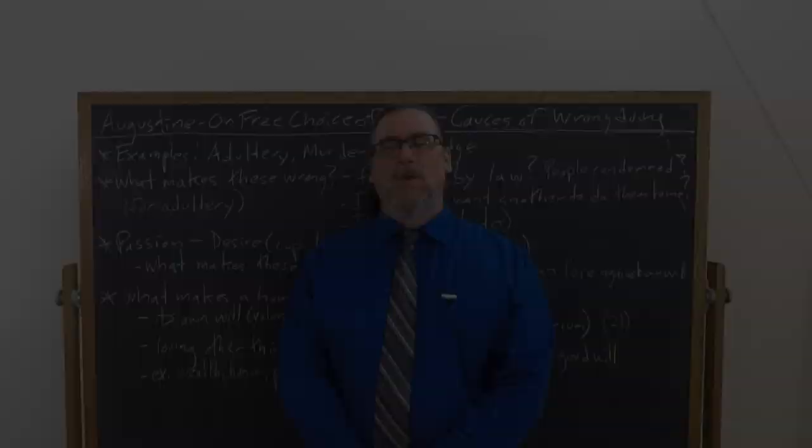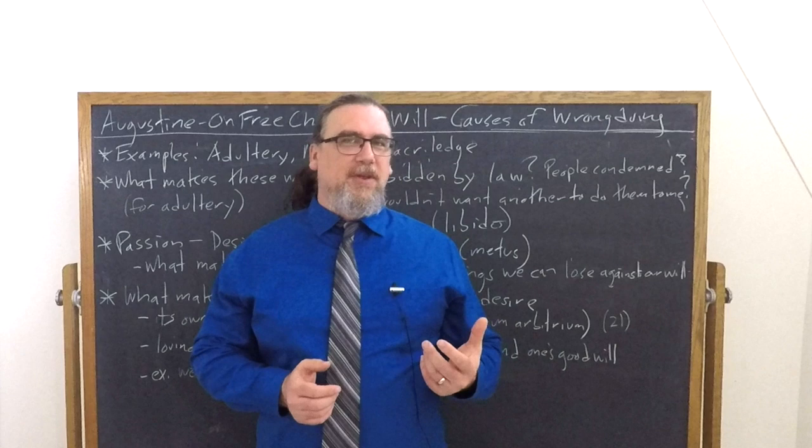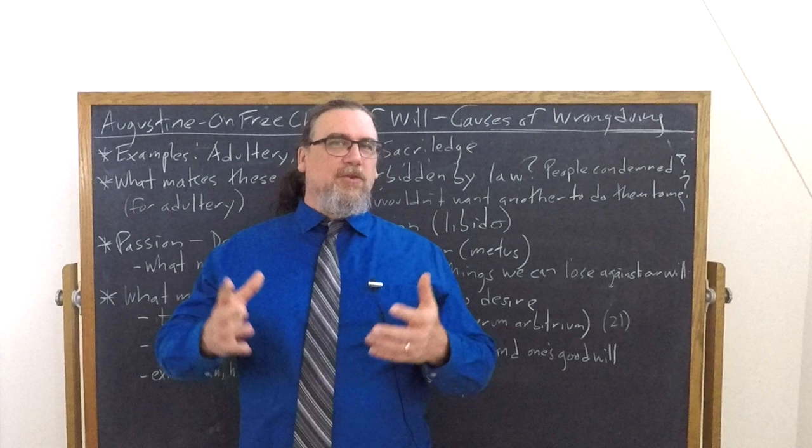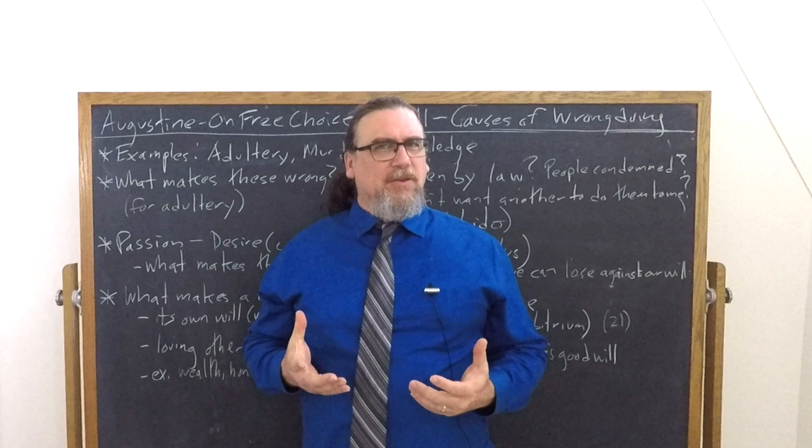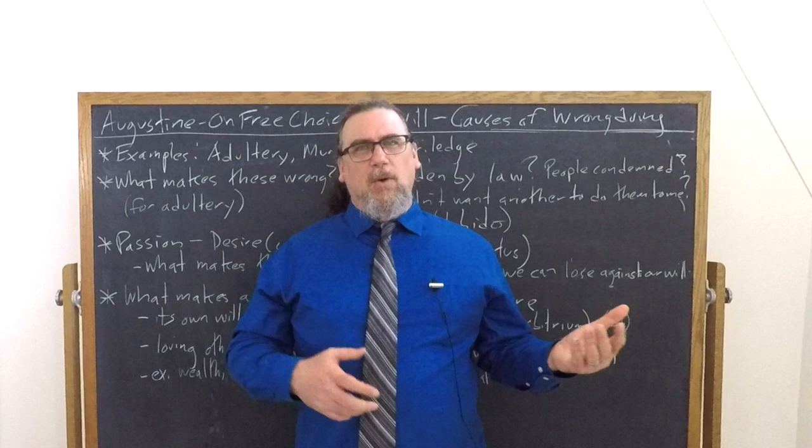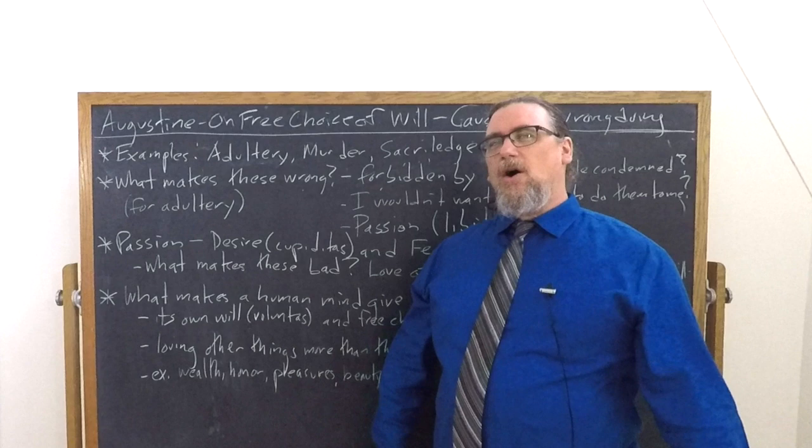One of the central questions that's being asked in Augustine of Hippos on Free Choice of the Will Book One is, what is the cause of wrongdoing? And that requires asking a somewhat deeper question: what is wrongdoing? What makes certain actions, certain behaviors wrong as opposed to being right? And there's some quite sophisticated reasoning going on in this dialogue. Sometimes it seems almost by way of digression, but it actually all holds together in one long account.